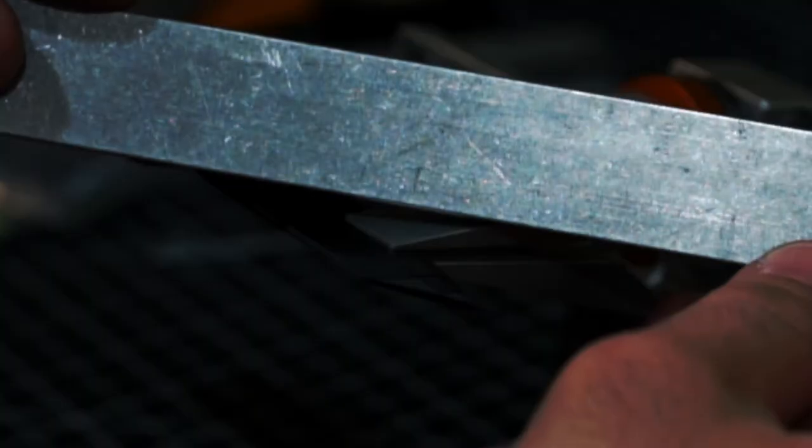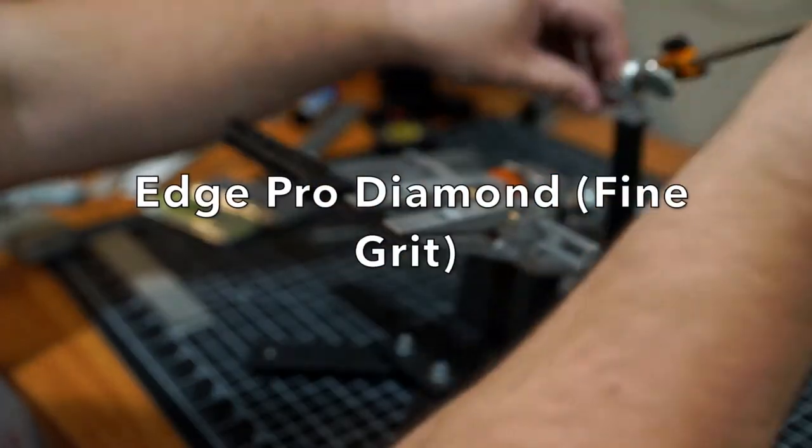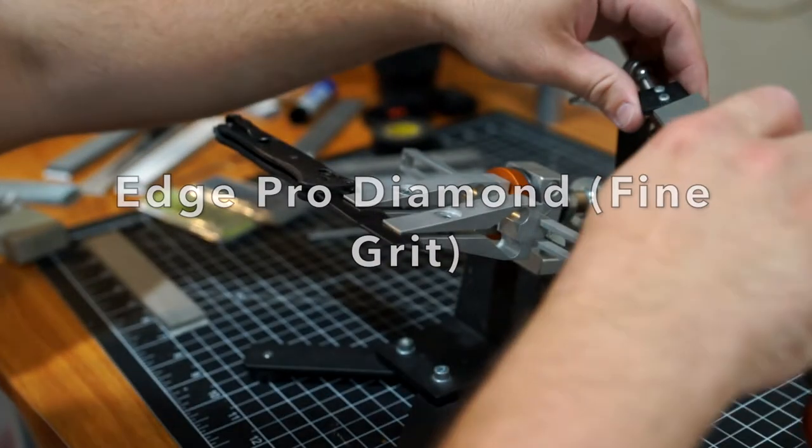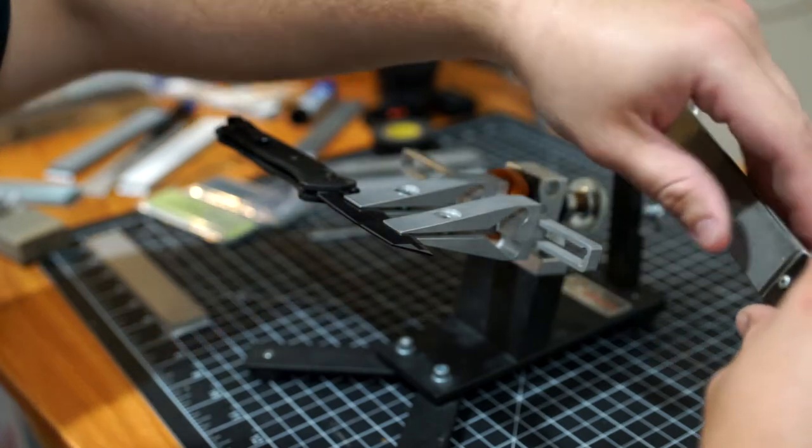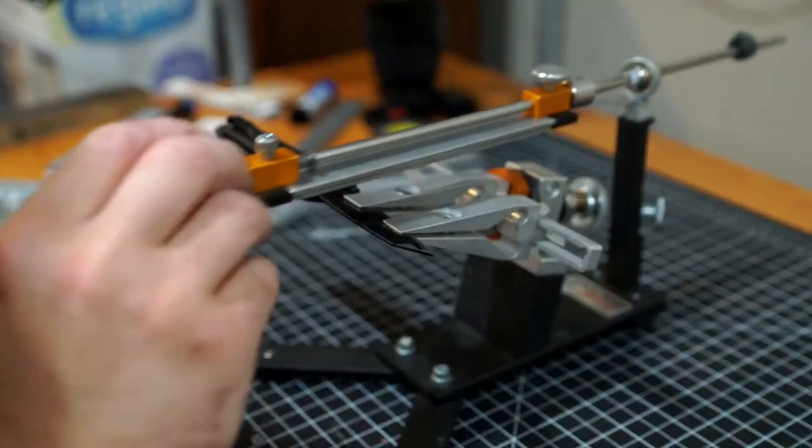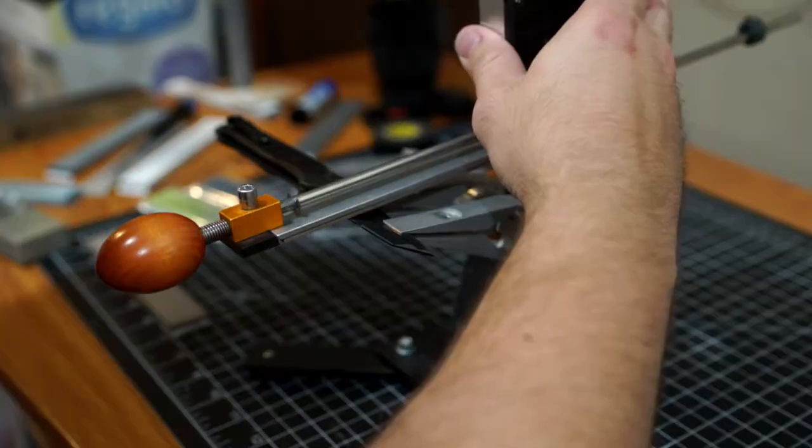I'm going to use the Edge Pro fine grit diamond. I'm not exactly sure what the grit level is, but it's pretty coarse. I want to say it's probably like 400 or so.